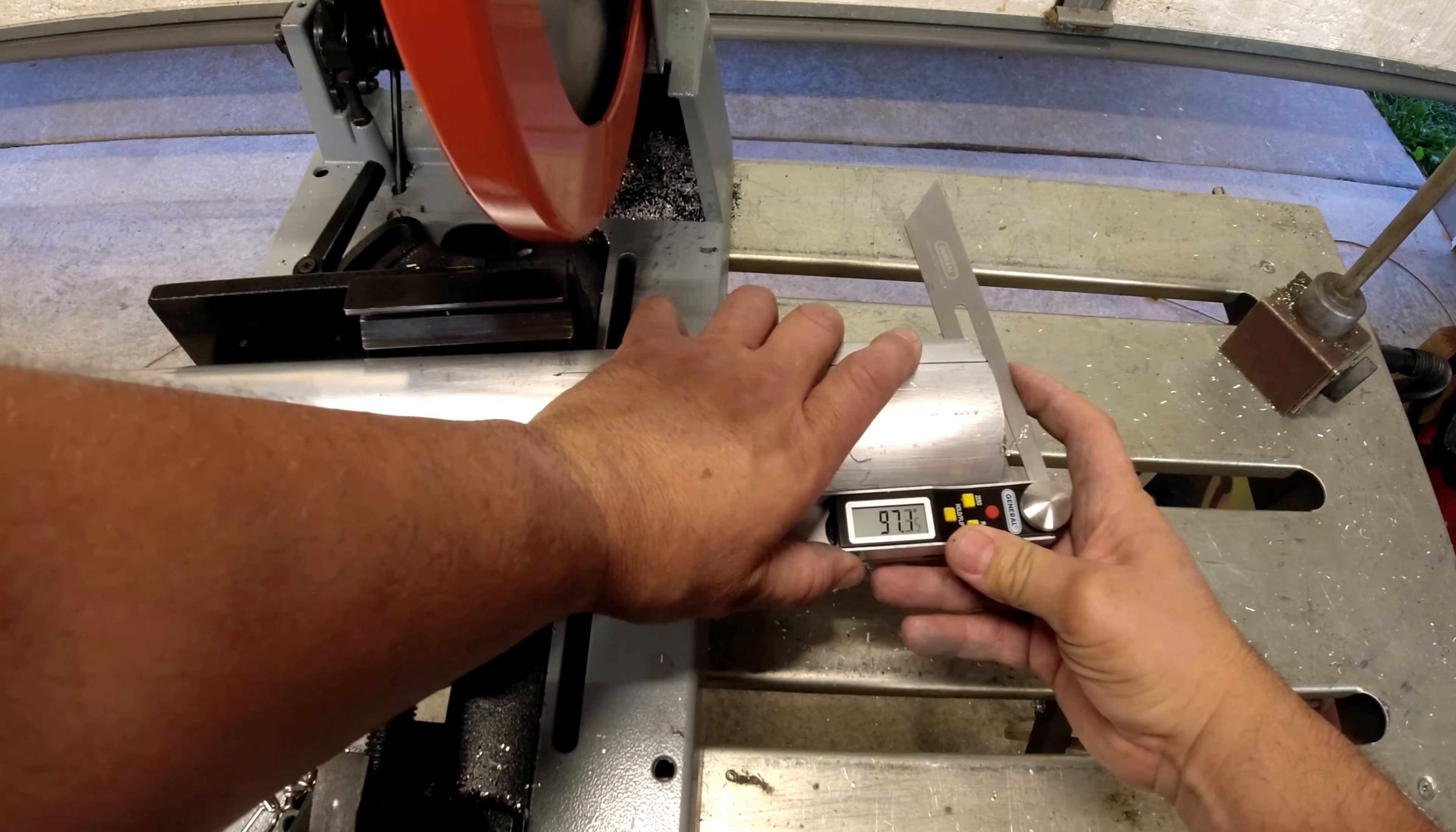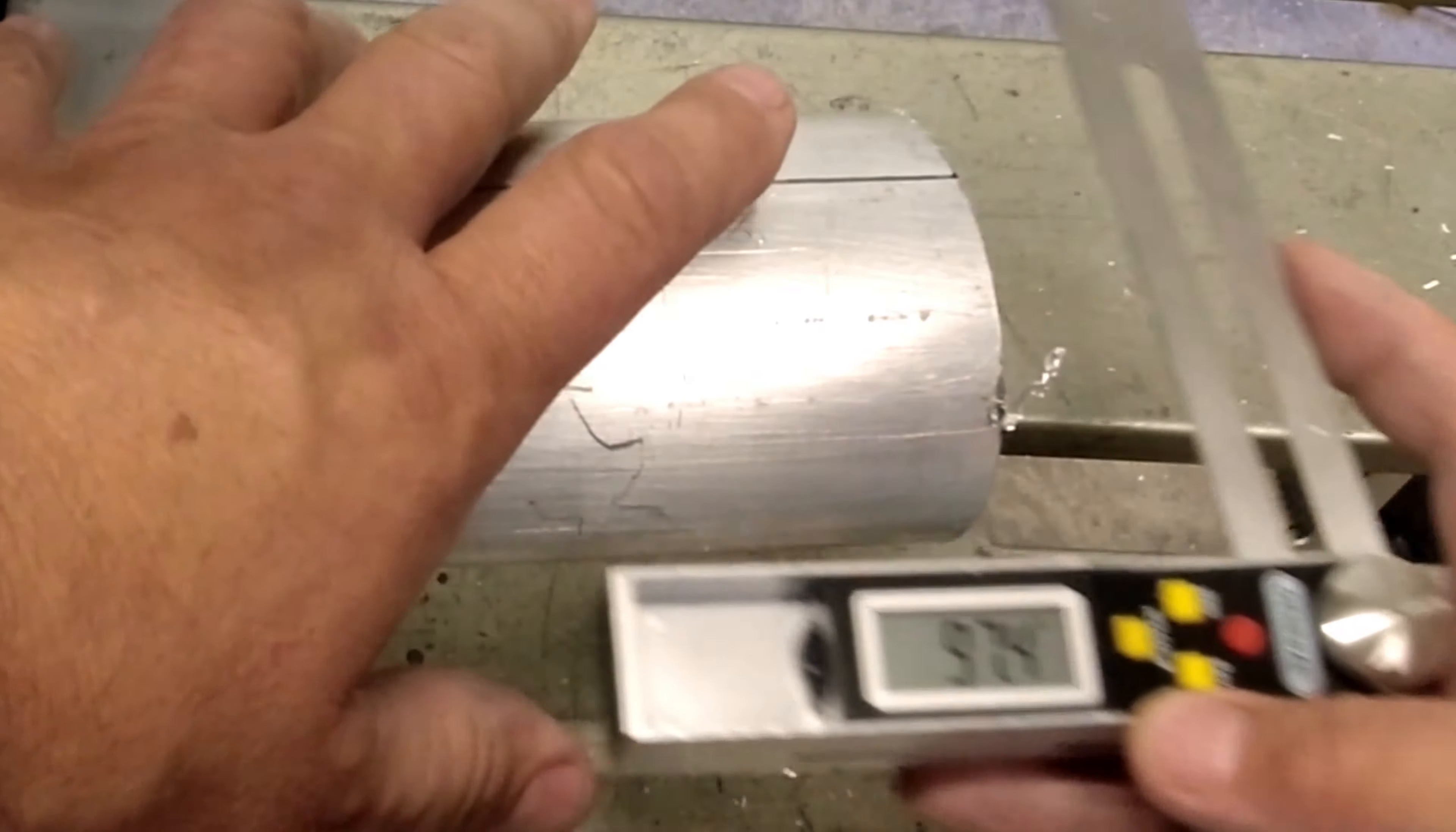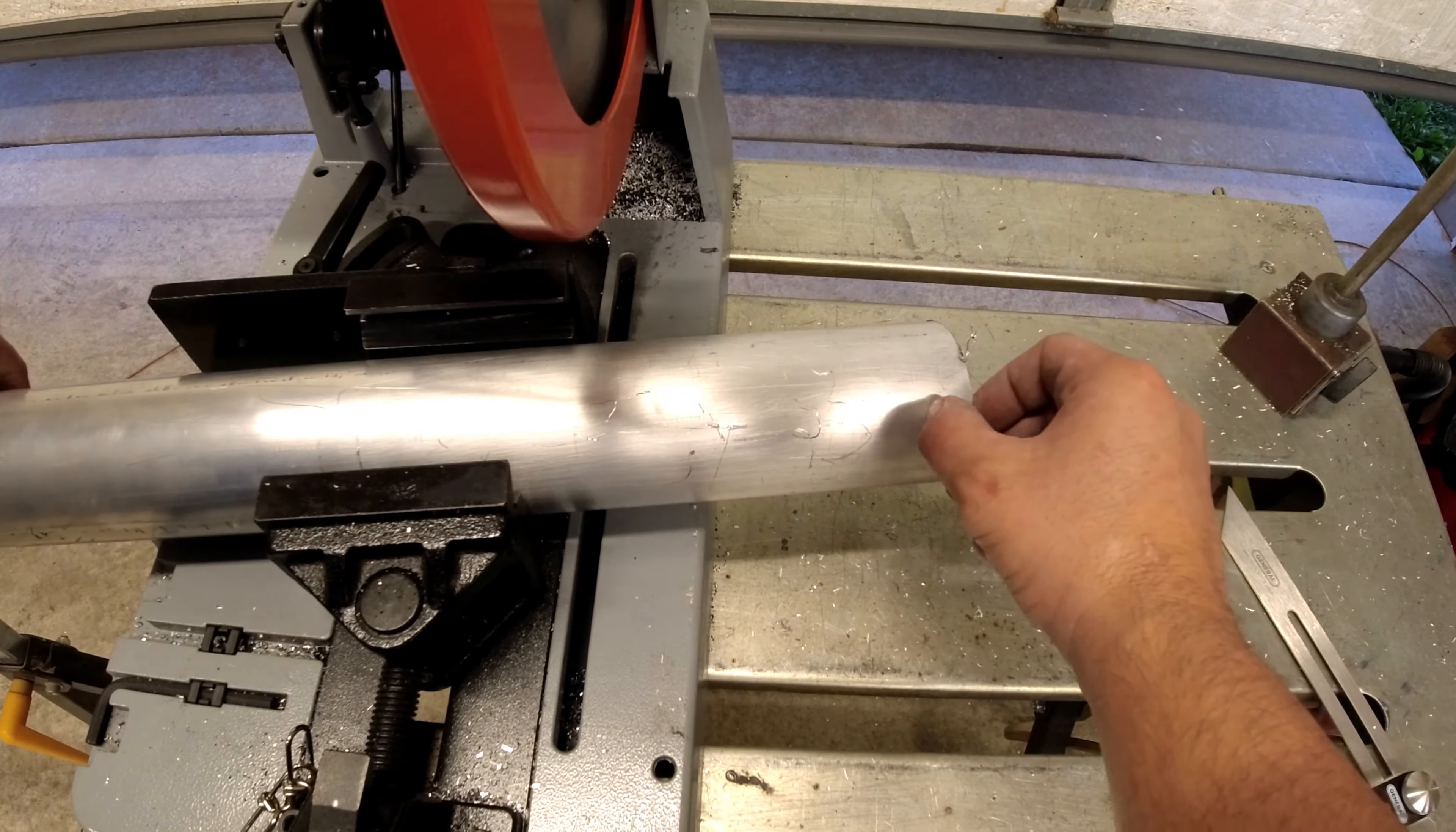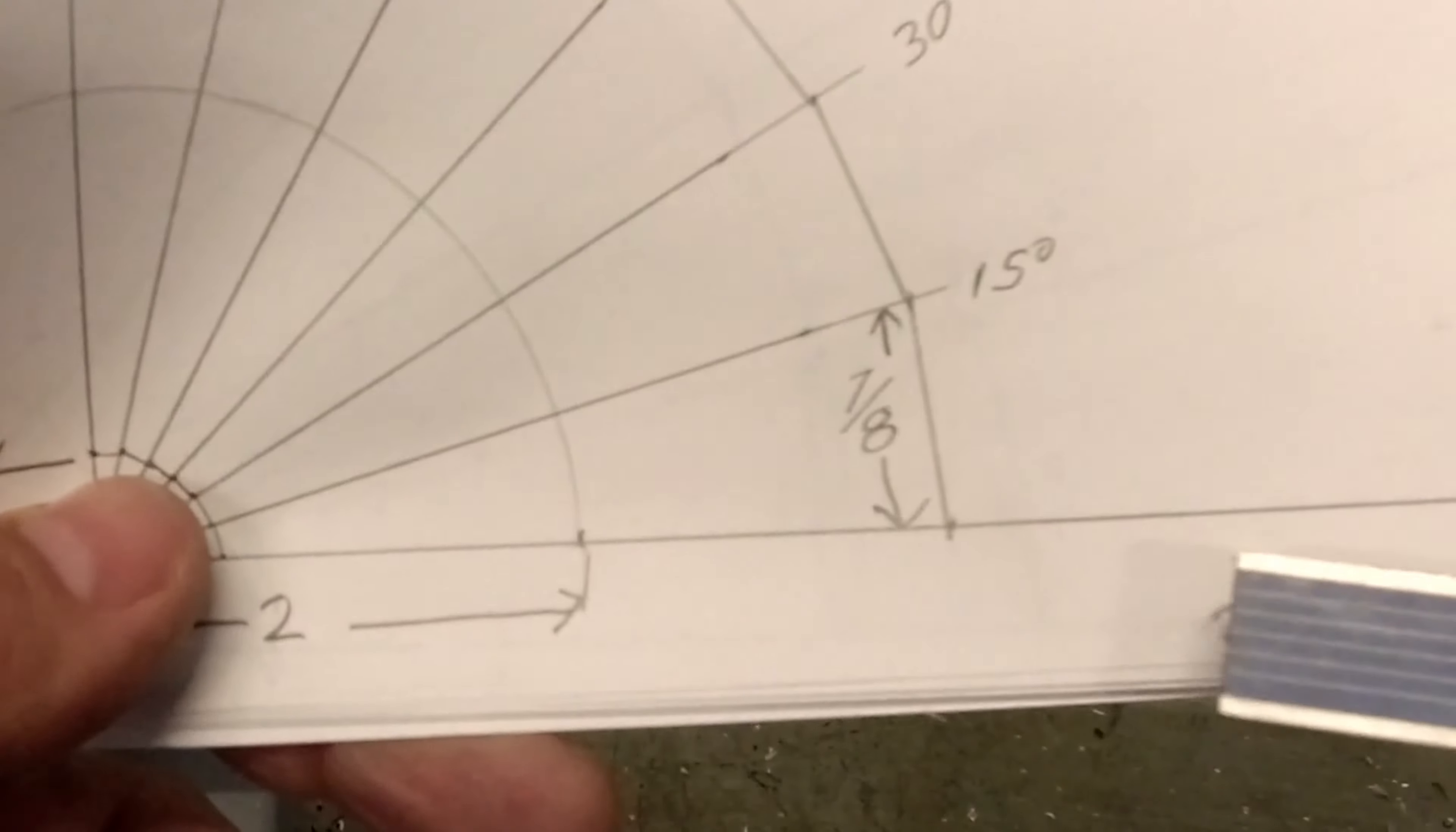We're going to double check our angle. We're looking for about seven and a half degrees. And I think we're pretty close - 97.4. I'm going to call that seven and a half.